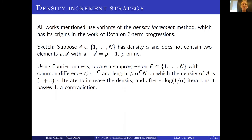Then you iterate that argument, keep increasing the density, and after a certain number of iterations — about log(1/alpha) — the density will get all the way up to one, and it can't pass one, otherwise you'd have a contradiction.